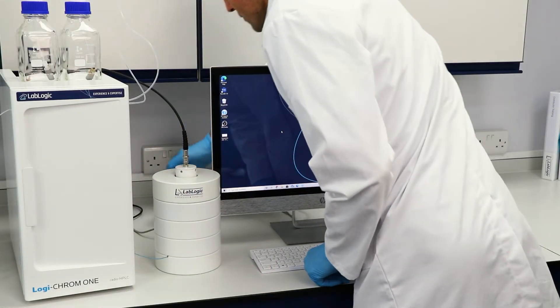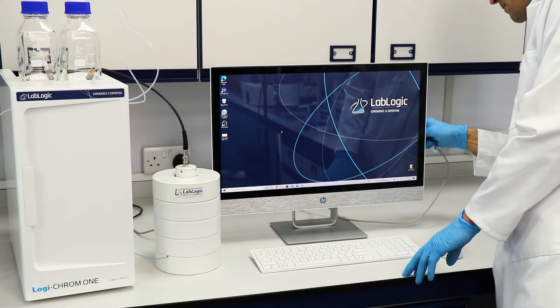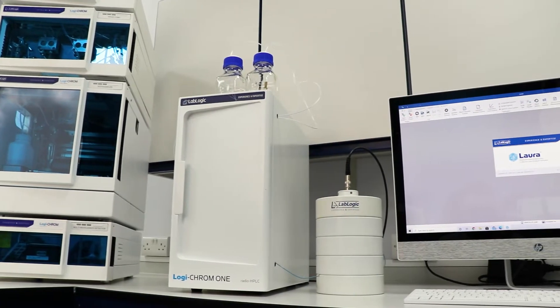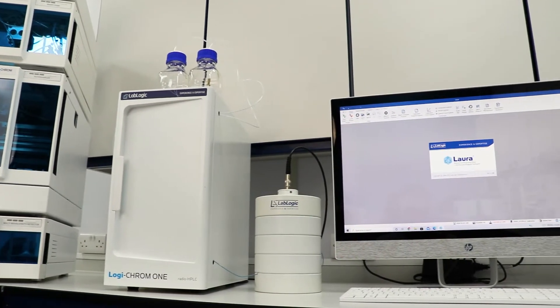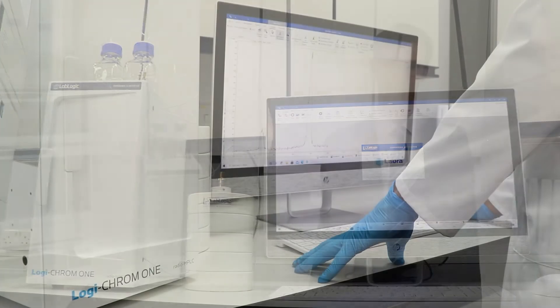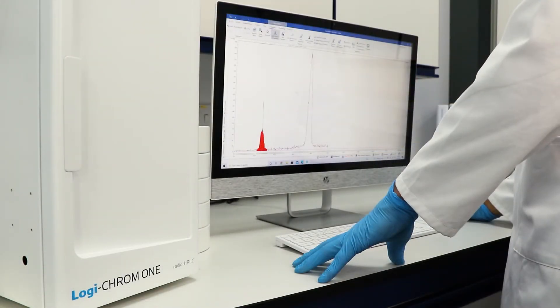Due to its simple design, the Logichrom One is a plug-and-play system. As with other LabLogic QC equipment, the Logichrom One is controlled by our industry-standard Laura for PET radiochromatography software. The benefit of the software is not just compliance, but it also provides powerful data analysis features.